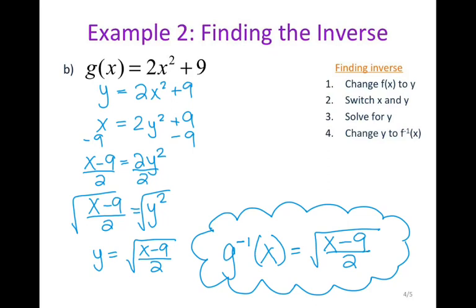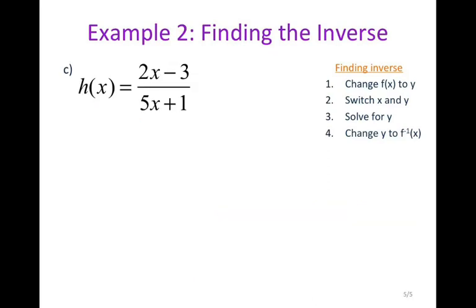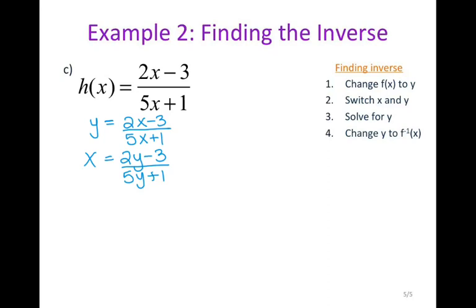Let's find the inverse of another function. Step one, change f of x to y — in this case we have h of x — so I'm going to write this as y equals 2x minus 3 over 5x plus 1. Step two, switch x and y, so now I have x equals 2y minus 3 over 5y plus 1. With this particular example it is a little bit more complicated because when we're solving for y, we actually have two y's in different spots.